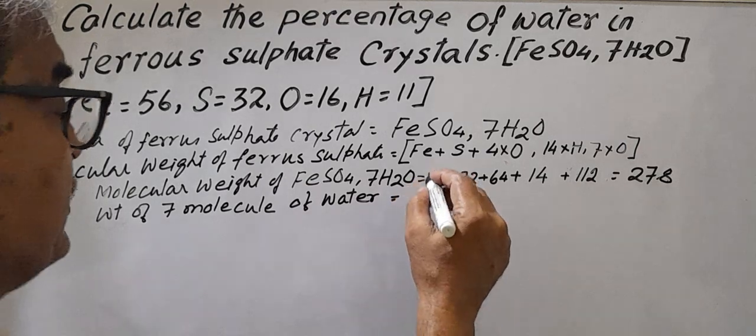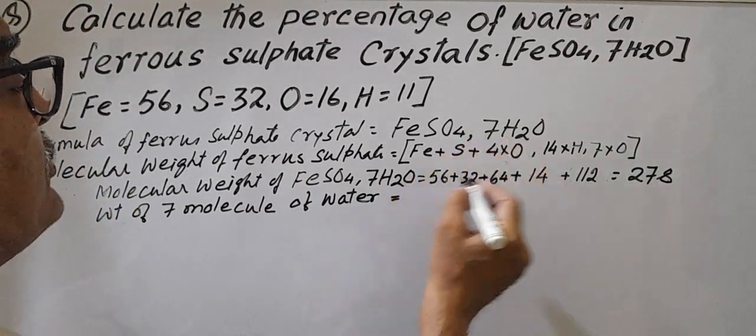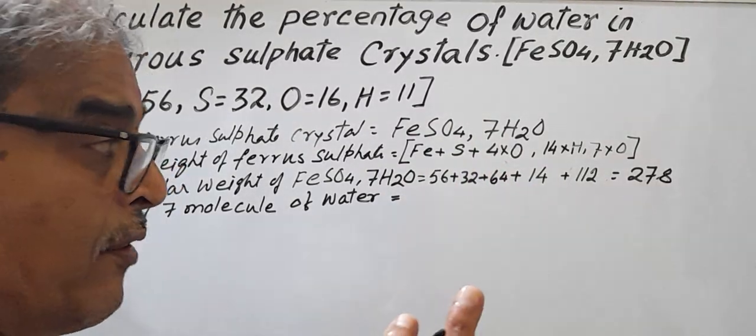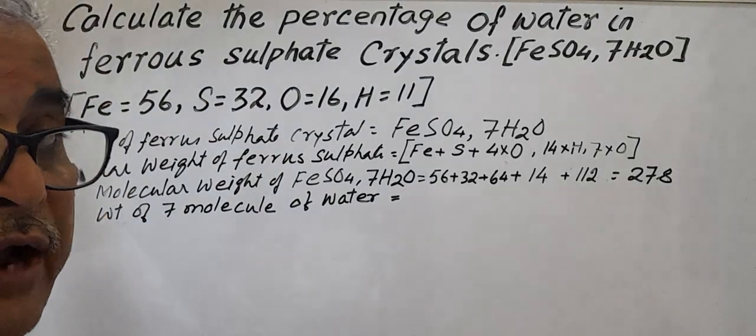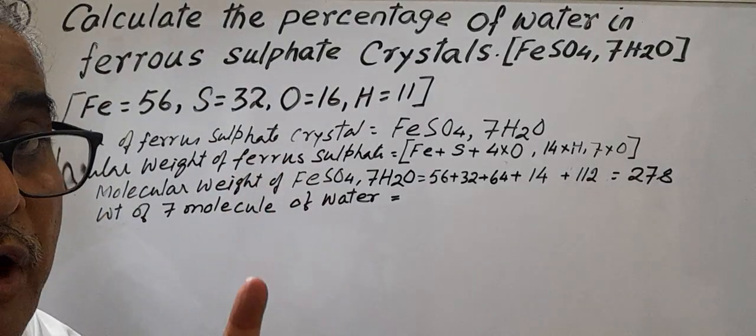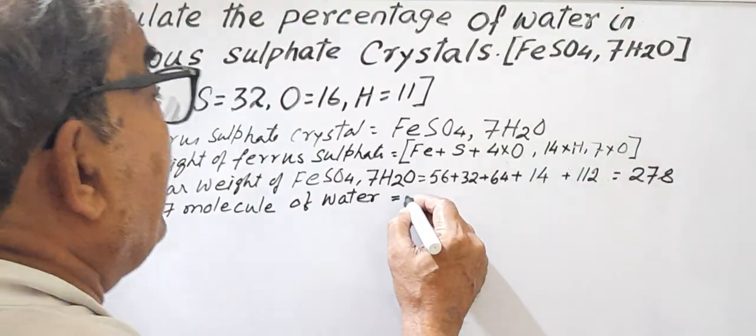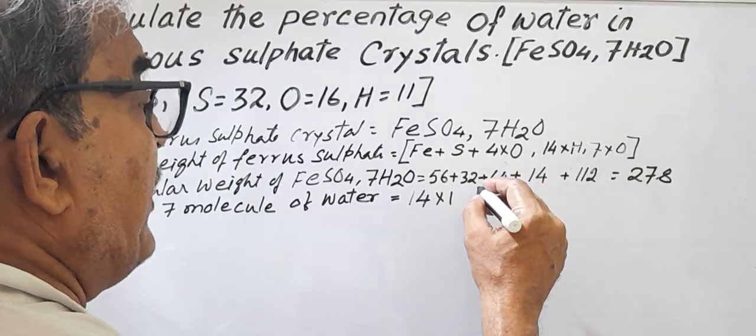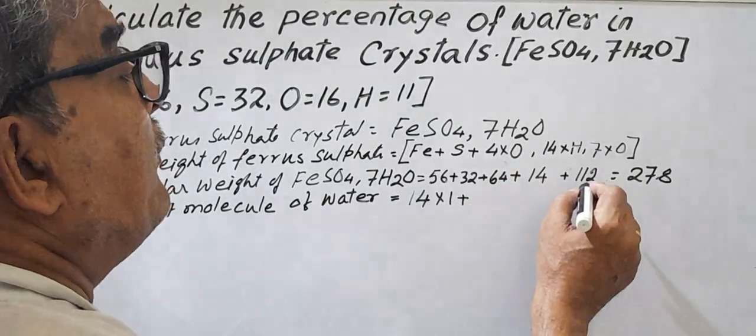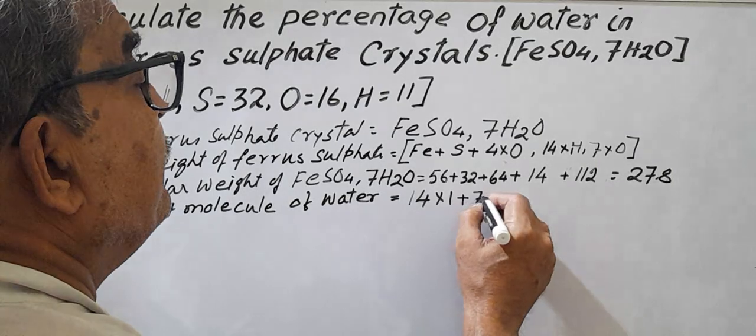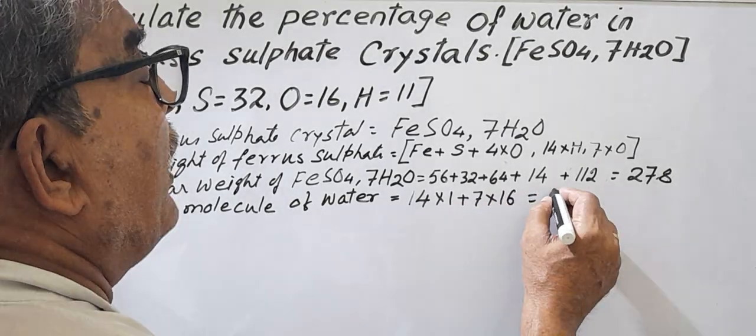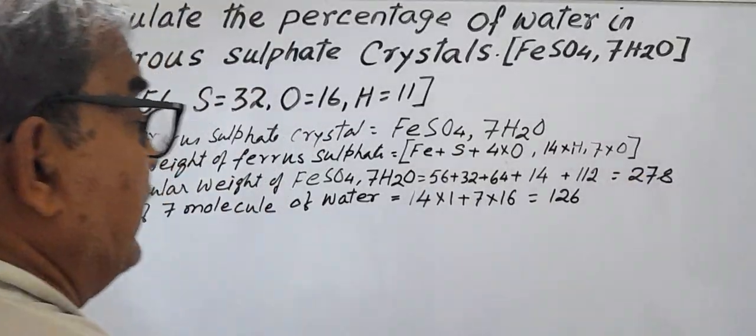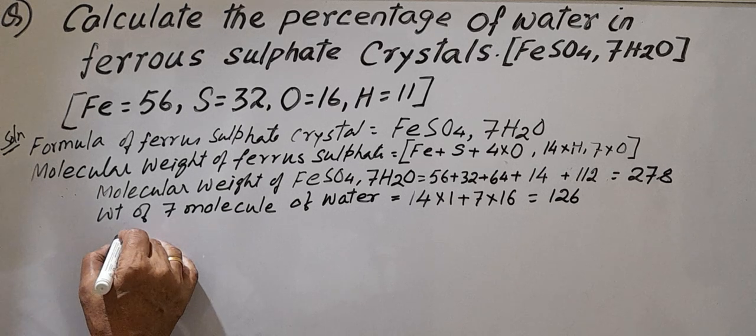Equal to simple 14 into 1 - 7 H2O, H2 means one molecule, remember, H2 means one molecule. If you write 2H, that is two atoms of hydrogen, be careful. 14 into 1 plus seven into 16, seven into 16, equal to 126.